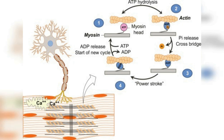This allows the process to repeat, with the myosin heads forming new cross-bridges and initiating new power strokes. The repeated cycles of attachment, power stroke, and detachment continue until the calcium ions are pumped back into the sarcoplasmic reticulum, causing the tropomyosin to cover the actin binding site and stopping the contraction. This results in the relaxation of the muscle fiber and the release of the generated force.